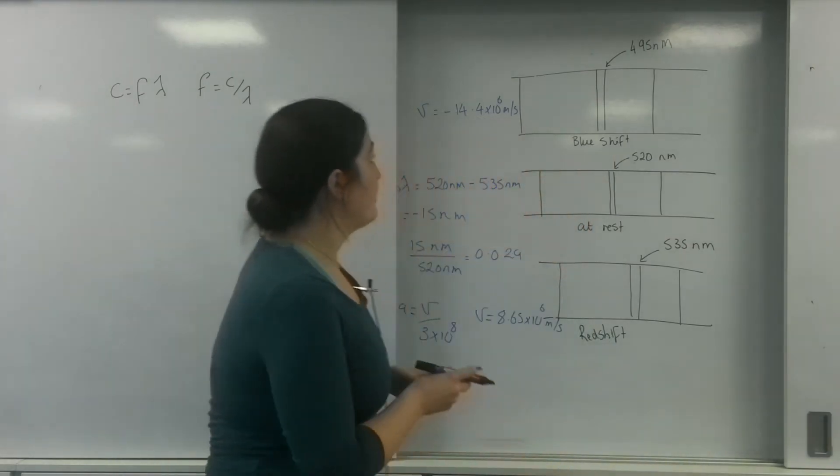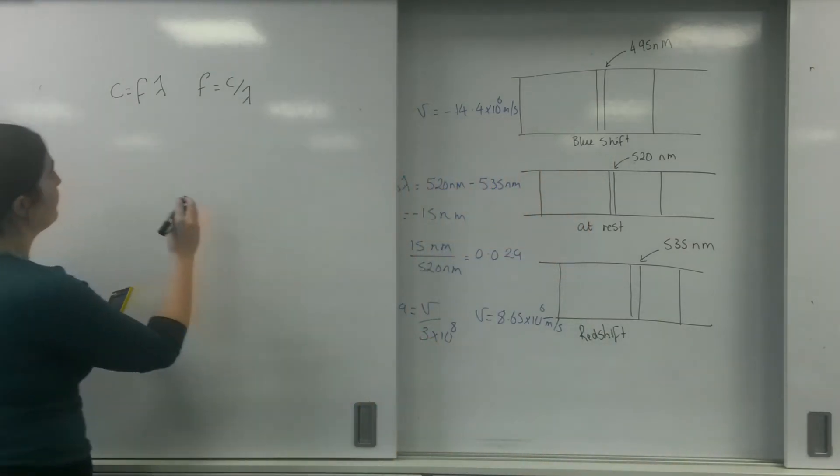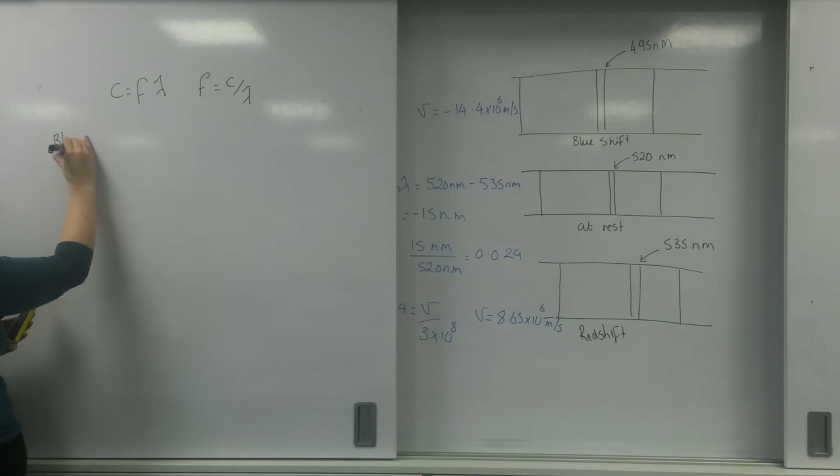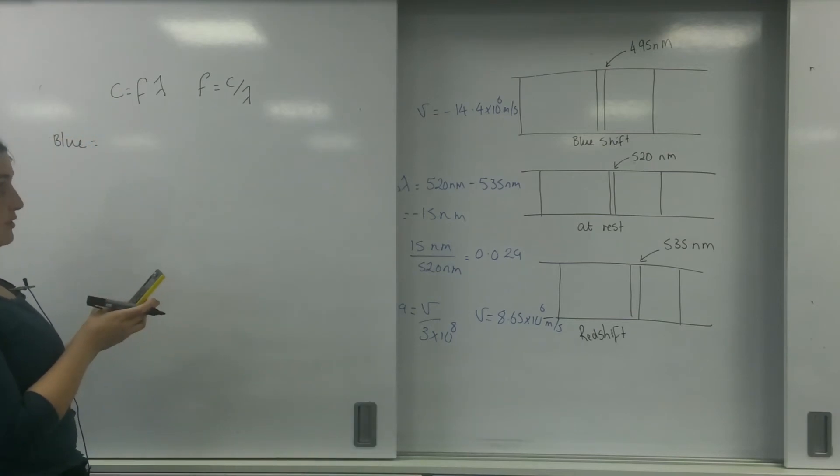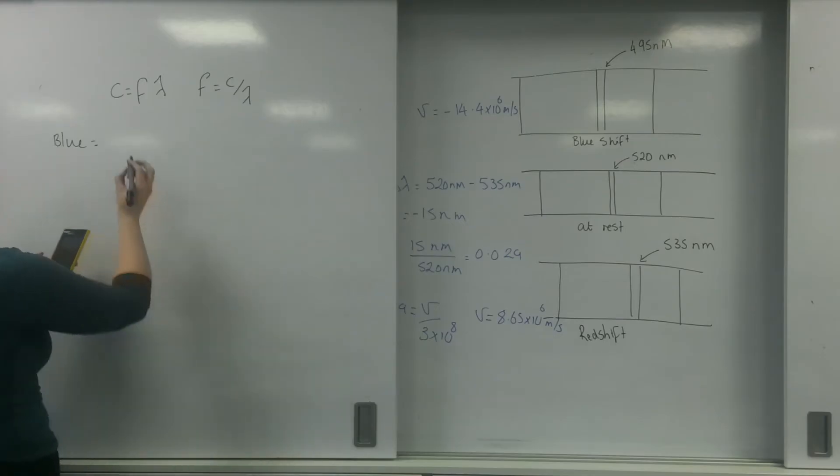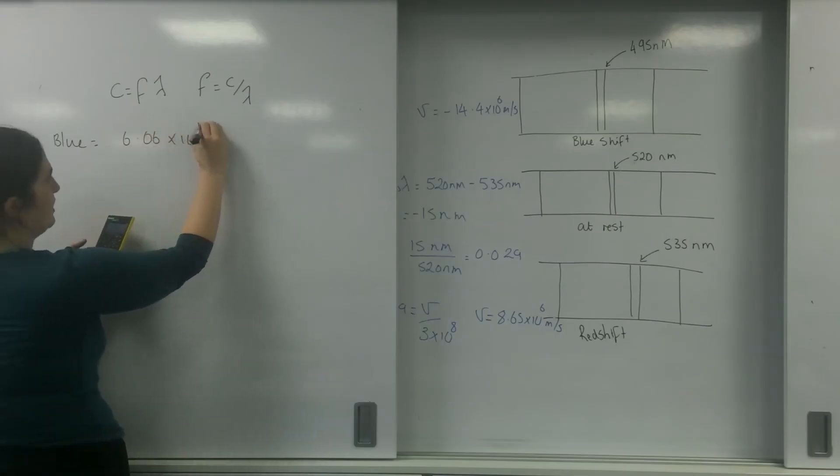So blue shift, that line has 3 times 10 to the 8 divided by 495 times 10 to the minus 9. And I've got a frequency of 6.06 times 10 to the 14 hertz.